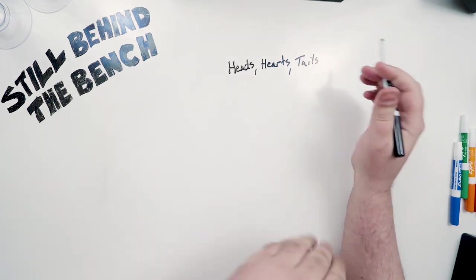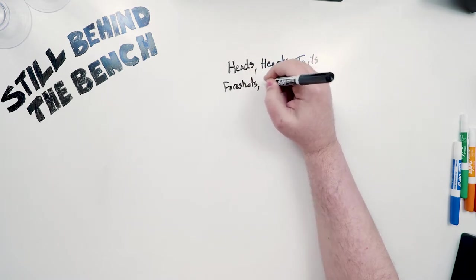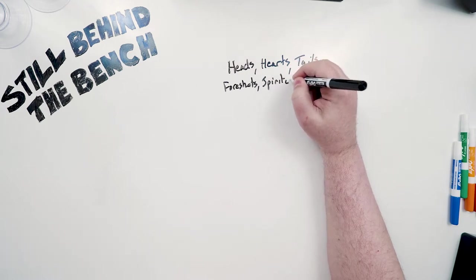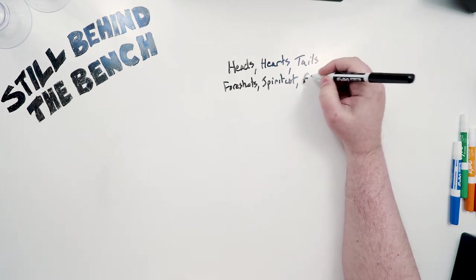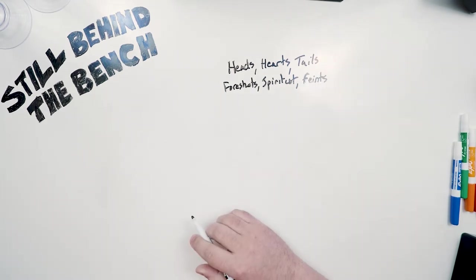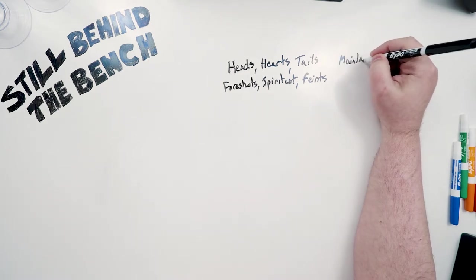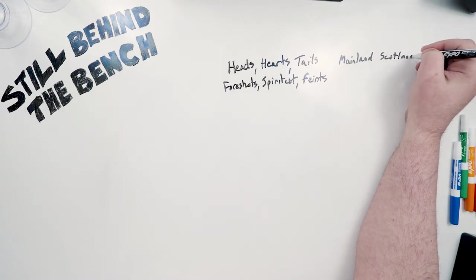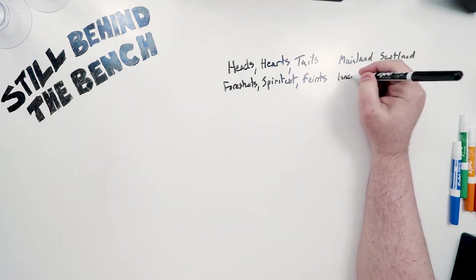There are other terms used though: foreshots, spirit cut, and faints. These are three other terms used for the same three cuts. The top terms were coined on mainland Scotland. Where exactly? I don't really think anyone knows. And then these bottom three terms were coined in the inner Hebrides Islands of Scotland.